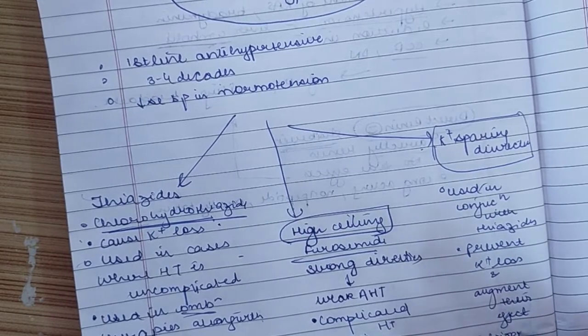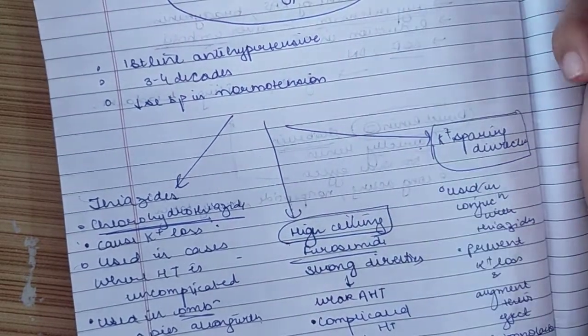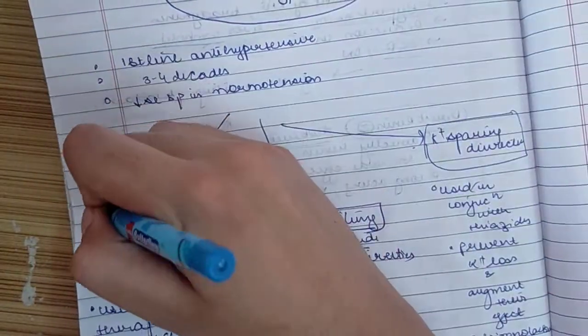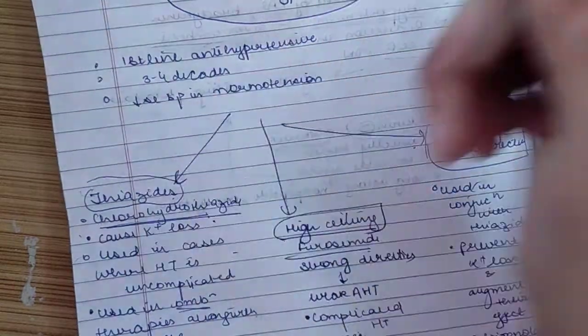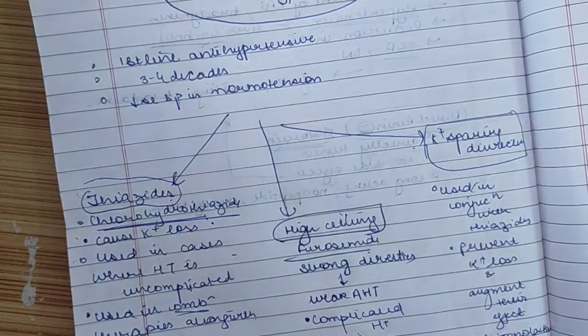They prevent potassium loss as well as augment or potentiate their effect. These include spironolactone and others. Most used are thiazides. High ceiling will be used only in complicated cases. Potassium-sparing are just to potentiate and augment the effect.